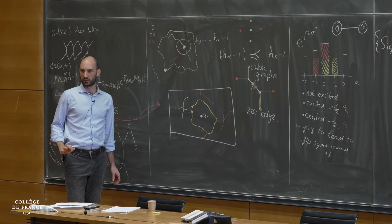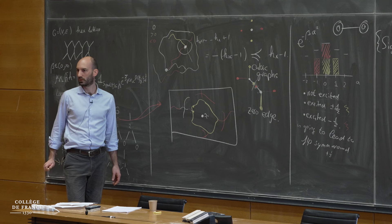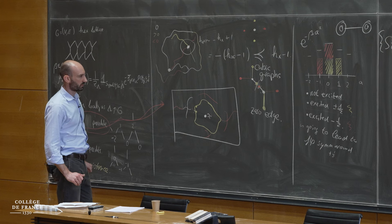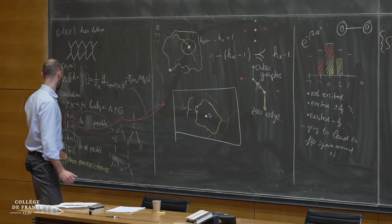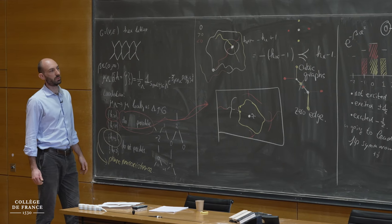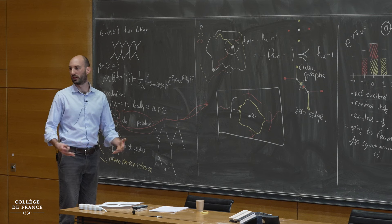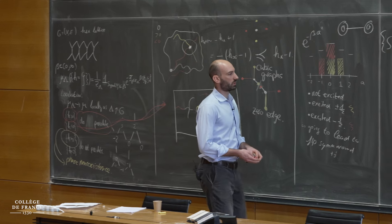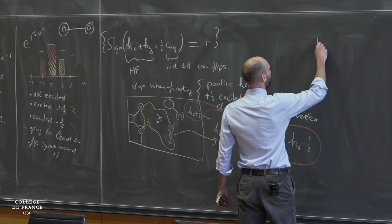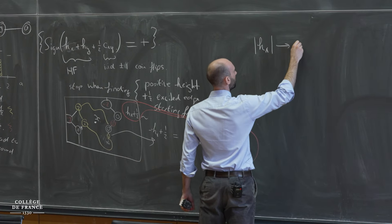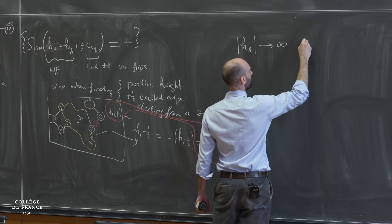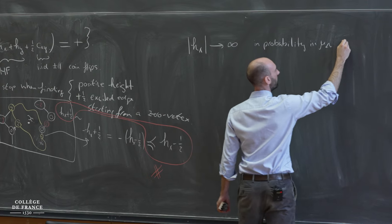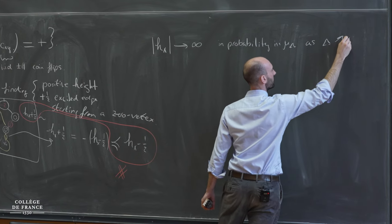Are there any questions about the delocalization? So what have we proved? We've proved that the variance blows up, or even more strongly that this measure is not tight — you cannot really define the limit measure. In fact, the absolute value of H_x goes to infinity in probability in mu_lambda as lambda goes to infinity.